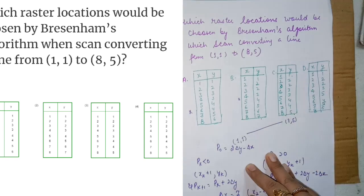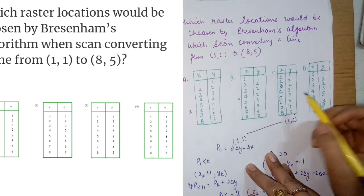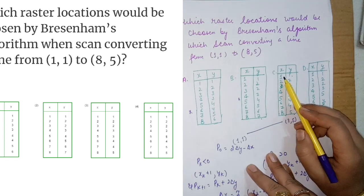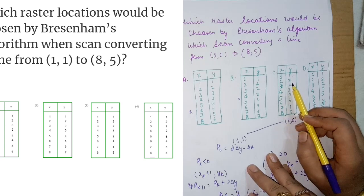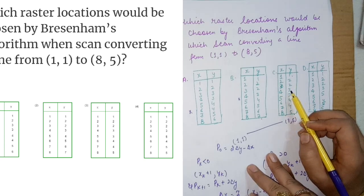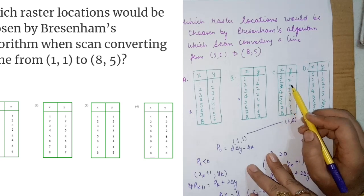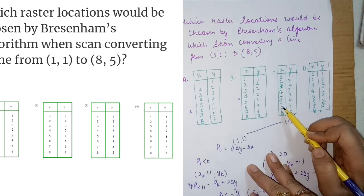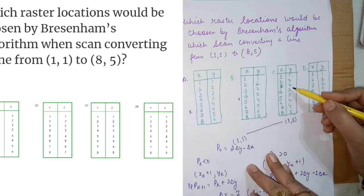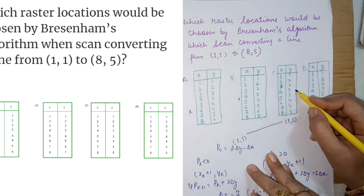So we can narrow it down to options C and D, as both contain the correct endpoints. Now let's check further. In Bresenham's line algorithm, the x and y coordinates only increment — there is never a decrement. Option C gives the sequence: (1,1), (2,2), (3,2), (4,3), (5,3), (6,4), (7,4), (8,5) — all coordinates are non-decreasing.